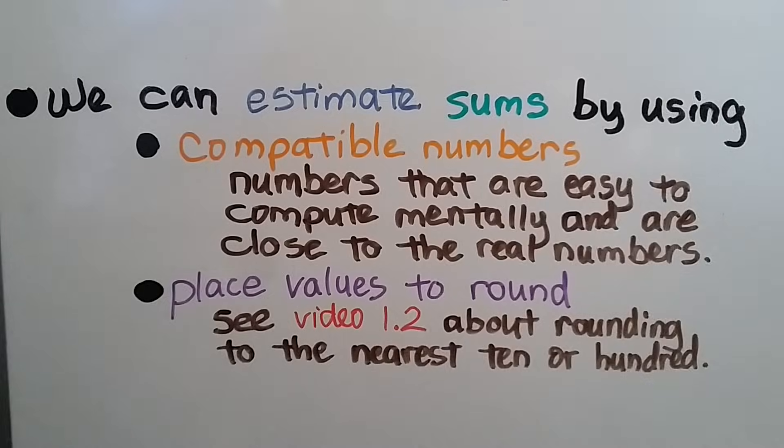We can estimate sums by using compatible numbers. Those are numbers that are easy to compute mentally and are close to the real numbers. We can also use place values to round. If you see the previous video, 1.2, about rounding to the nearest 10 or 100, you'll understand.